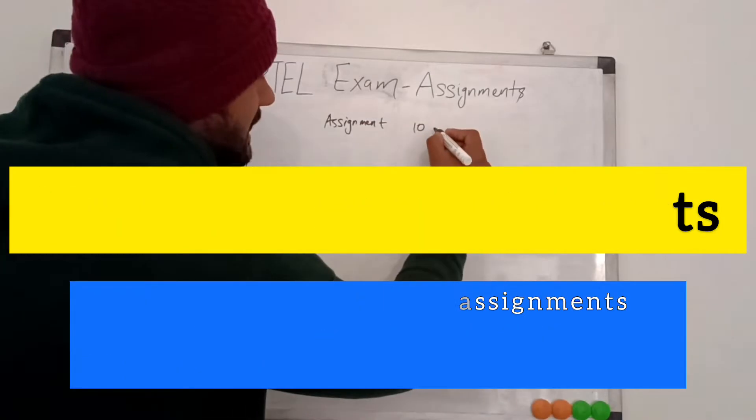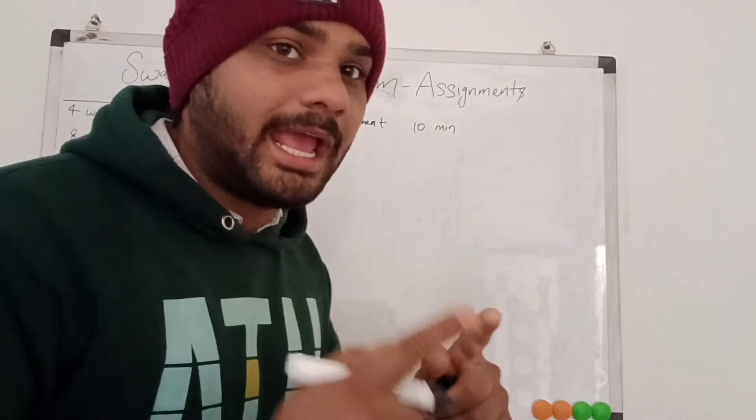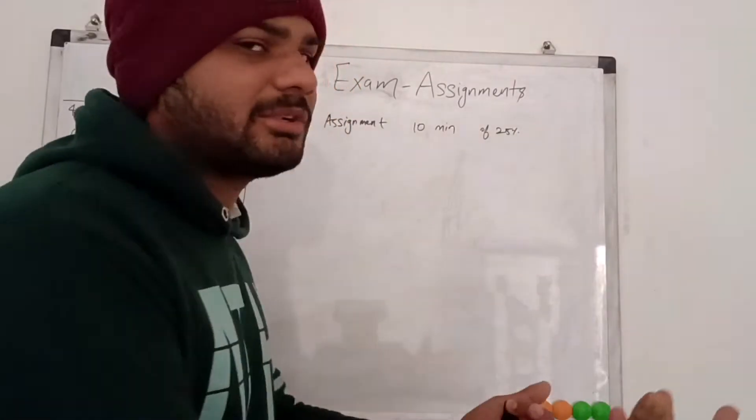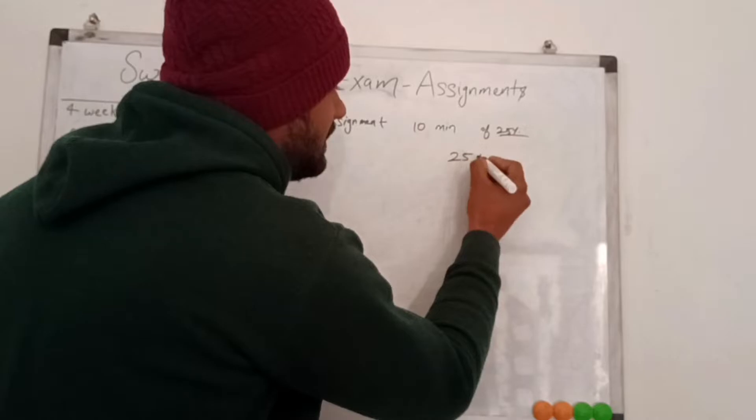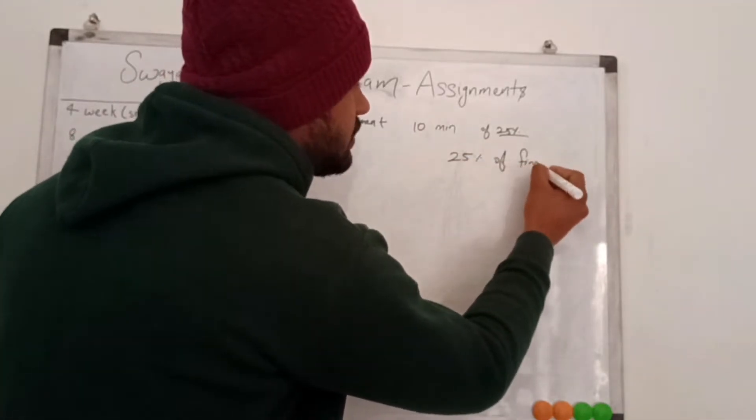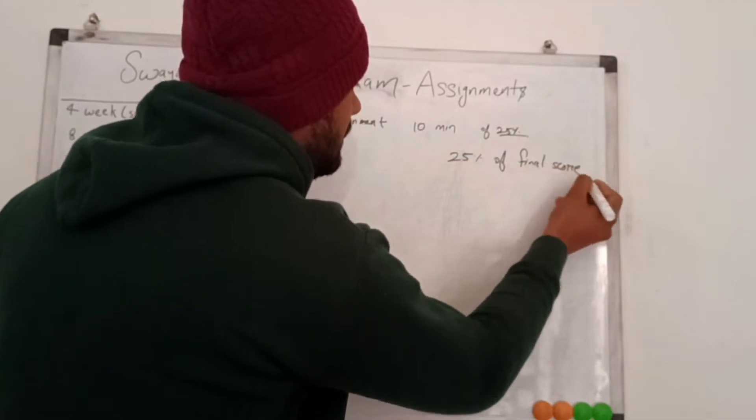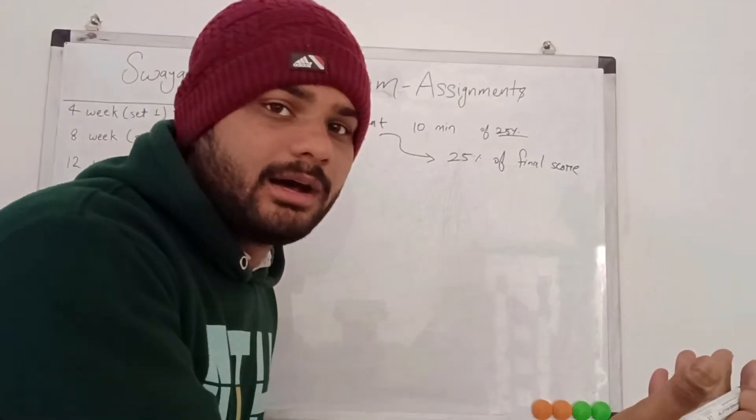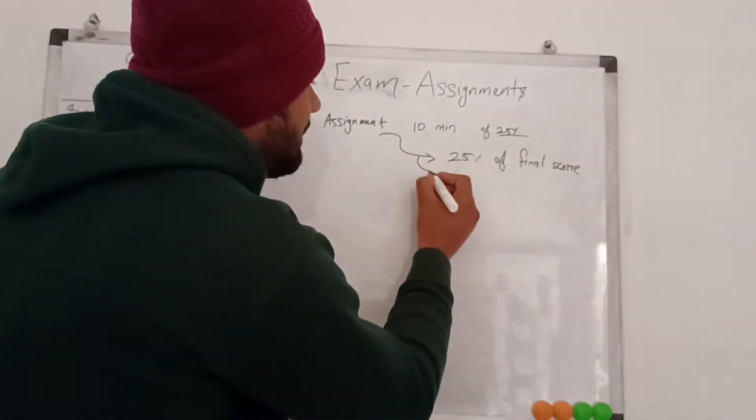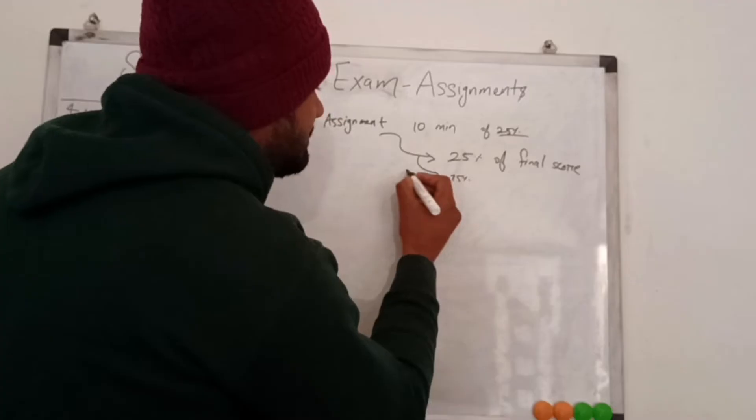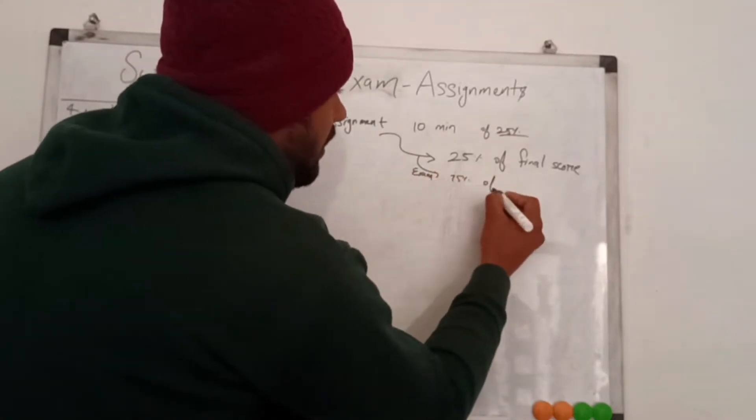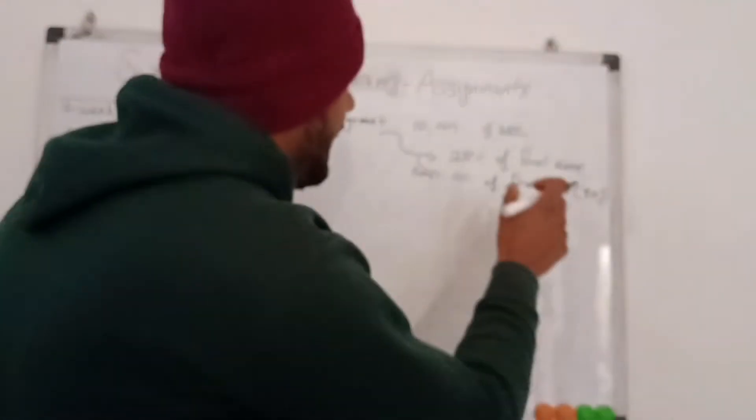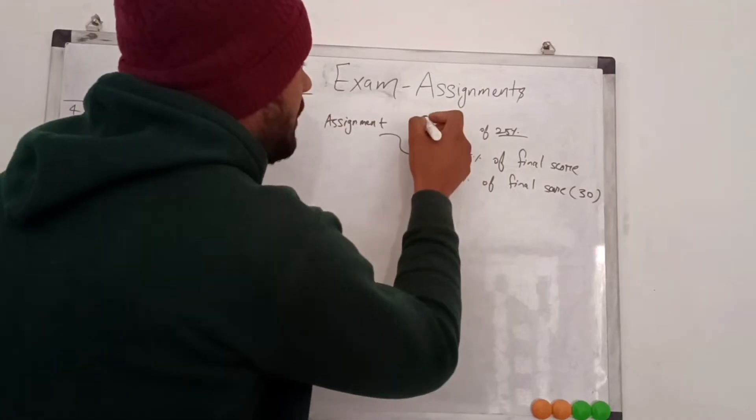Very first thing: assignments in the NPTEL, the minimum that we require is 10 out of 25 percent. What is that 25 percent? It is 25 percent of the final score. From assignments we get 25 percent and the main exam that you go to the exam center and give, that is about 75 percent. Of the final score, where you want minimum 30 marks, and in this assignment you want minimum 10 marks.